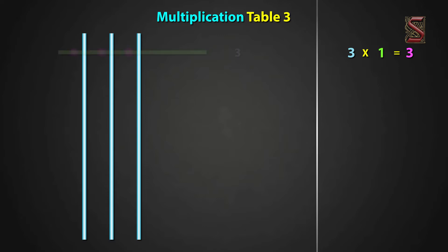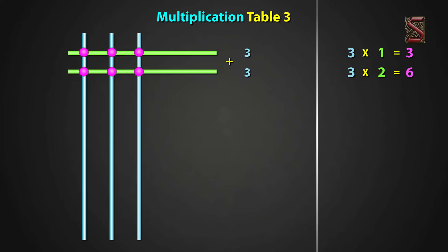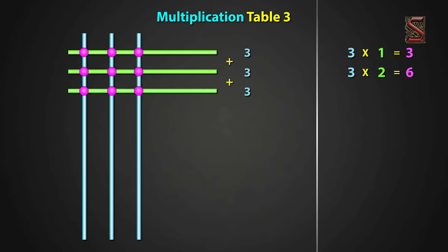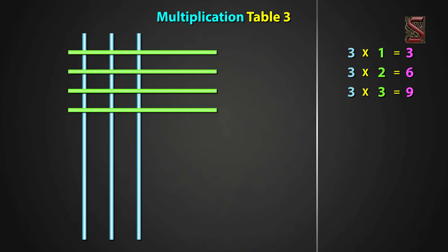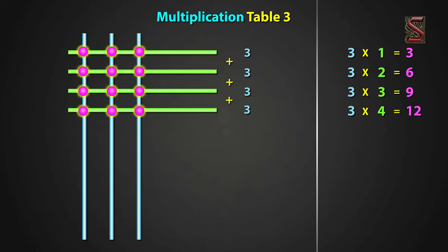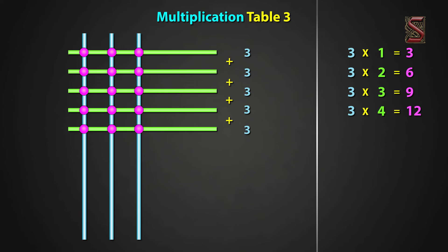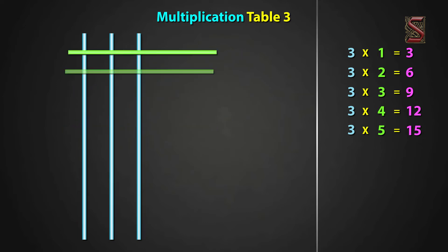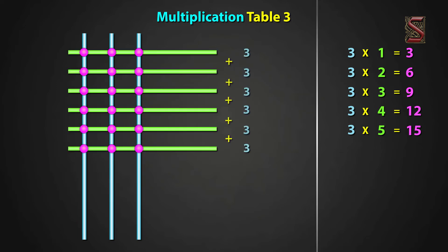3 two times, draw 2 sleeping lines. We have 6 meeting points. So, 3 two times equal to 6. 3 three times, draw 3 sleeping lines. We have 9 meeting points. And, 3 three times equal to 9. 3 four times, draw 4 sleeping lines. We have 12 meeting points. And, 3 four times equal to 12. 3 five times, draw 5 sleeping lines. We have 15 meeting points. Now, 3 five times equal to 15. 3 six times, draw 6 sleeping lines. We have 18 meeting points. Now, 3 six times equal to 18.